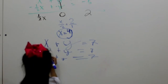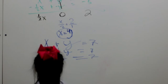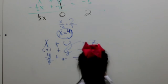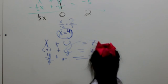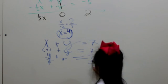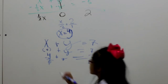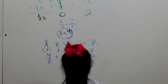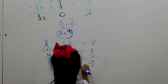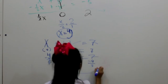And then, 4 minus 4 is 0. Or you can cancel that. 7 minus 4 is 3. Notice, you have to do the same thing on each side. So, you bring the y down equal to 3.